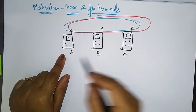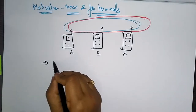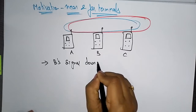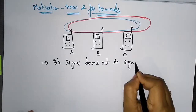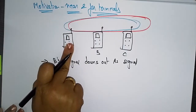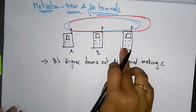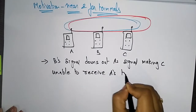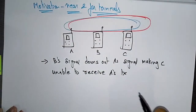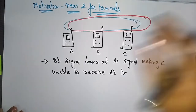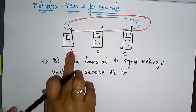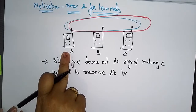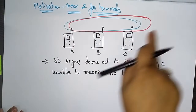The problem here is that B's signal drowns out A's signal, making C unable to receive A's transmission. A and B are both sending with the same transmission power, but B's signal dominates, making C unable to receive A's signal.